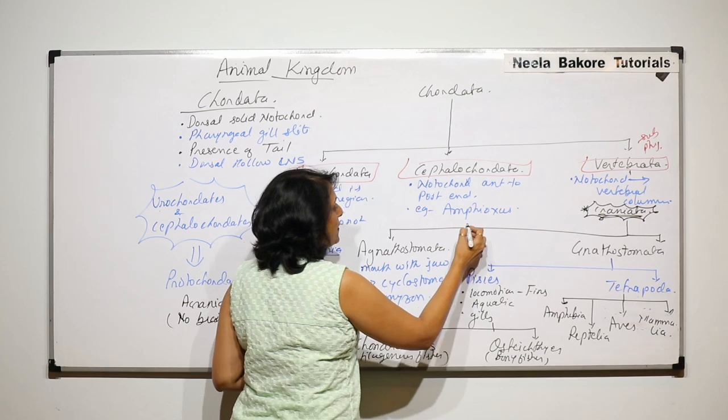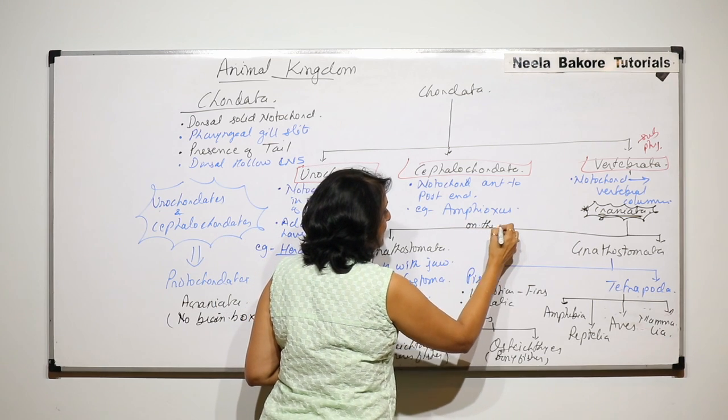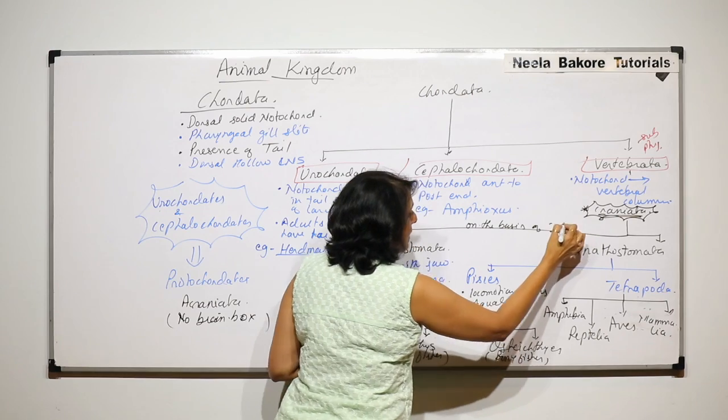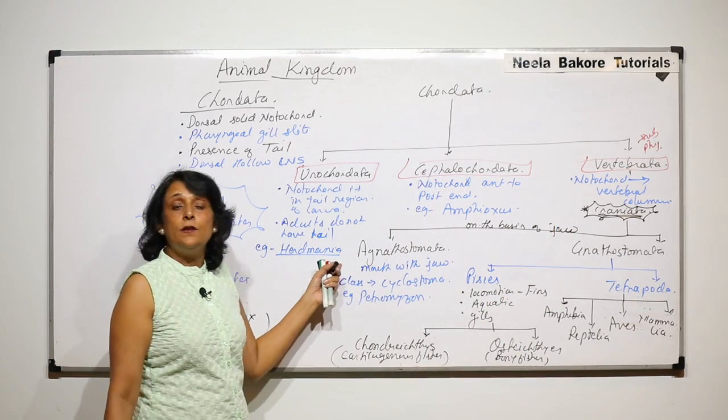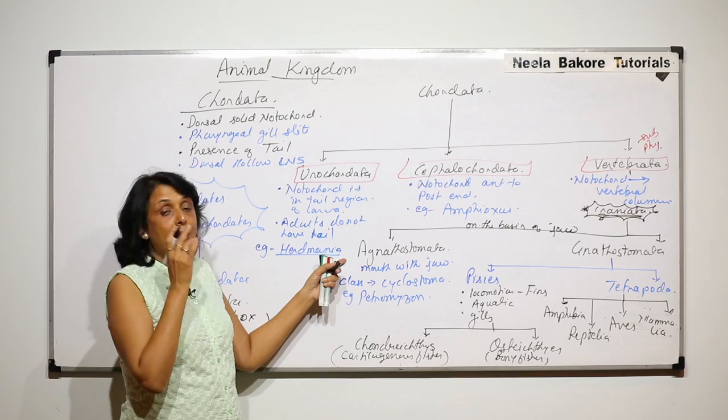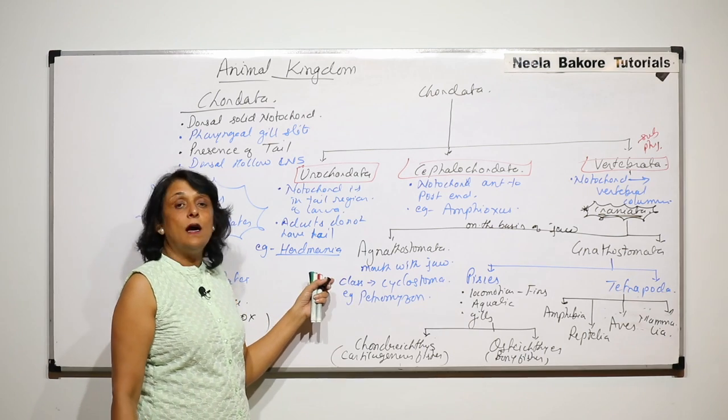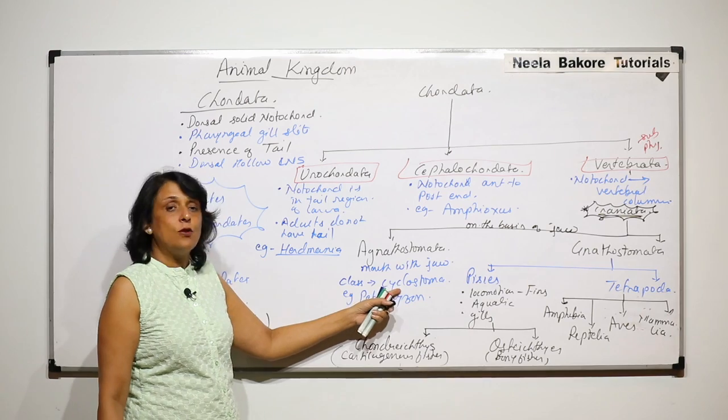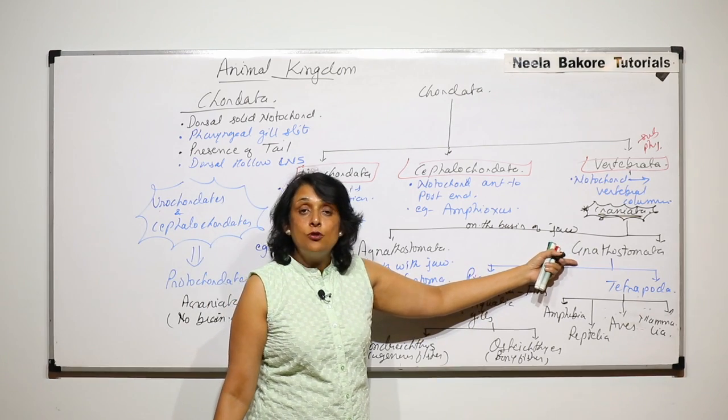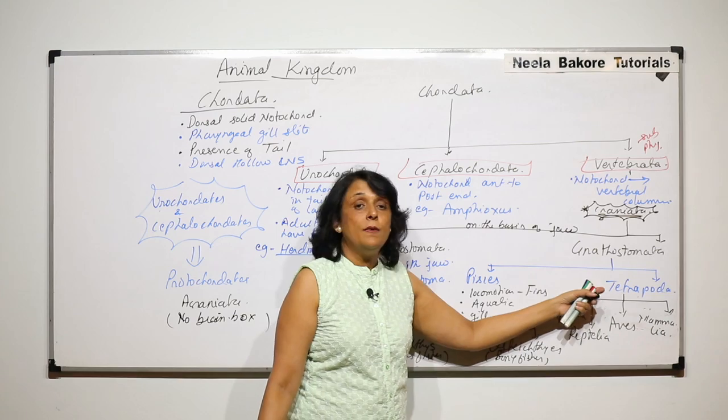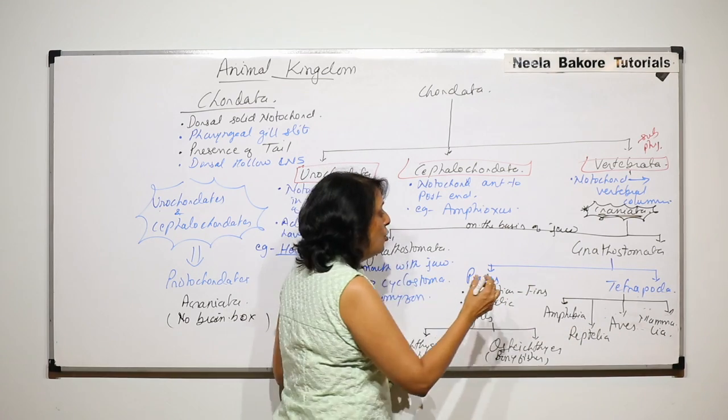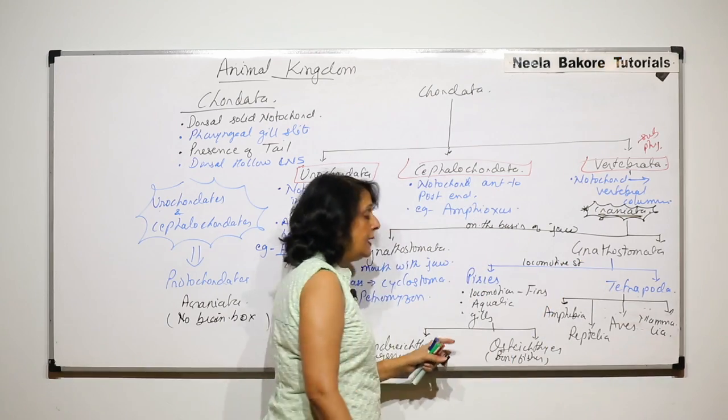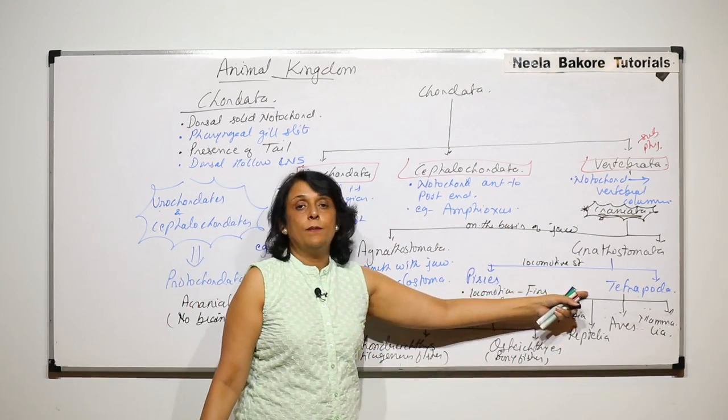Whereas Vertebrata, where the notochord gets replaced by vertebral column, they have brain box. That is why there is another term given to them, Craniata. Next classification is on the basis of jaw. Whether the mouth is with jaw or without jaw. Agnathostomata are without jaw in the mouth, only one class Cyclostomata. Gnathostomata have jaws in their mouth and we divide them on the basis of locomotive structure.